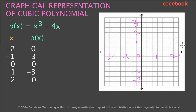In this lesson, we will look at the graphical representation of a cubic polynomial. A cubic polynomial is a polynomial whose degree is 3. If you observe the polynomial x cubed minus 4x, the highest power of x is 3, so the degree of this polynomial is 3, which means it is a cubic polynomial.